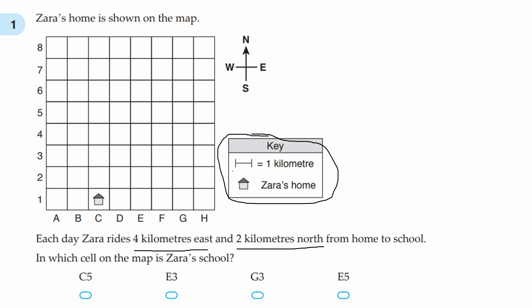We can see that one space is 1km, and Zara's home looks like this. Here is Zara's home, and if she goes 1, 2, 3, 4km east, and 1, 2km north, she ends up here, at a school.